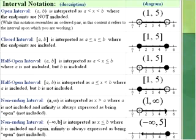Here you can see the different types of notation that you're going to see and write for these problems. We have an open interval, which is interpreted as x greater than A and less than B, meaning the endpoints are not included. Parentheses are used when the endpoints are not included in your solution. You don't want to confuse this with an ordered pair — this refers to interval notation.